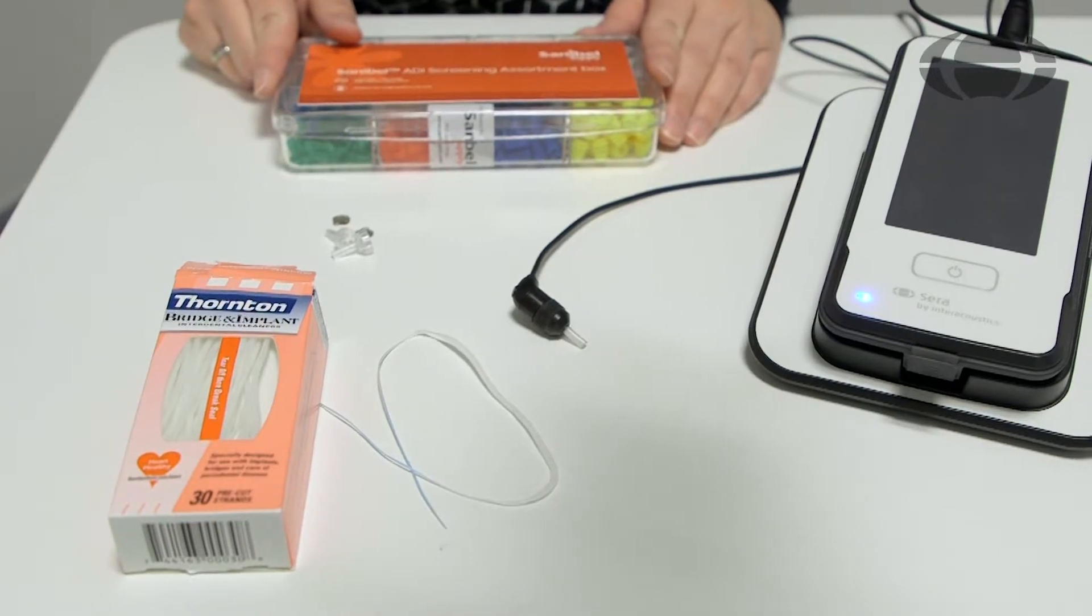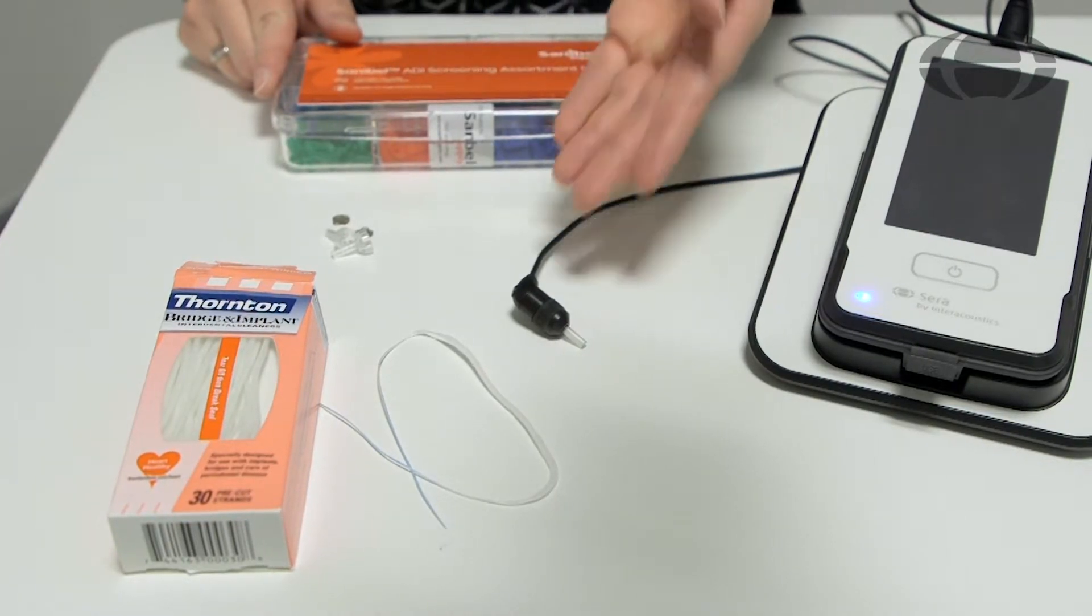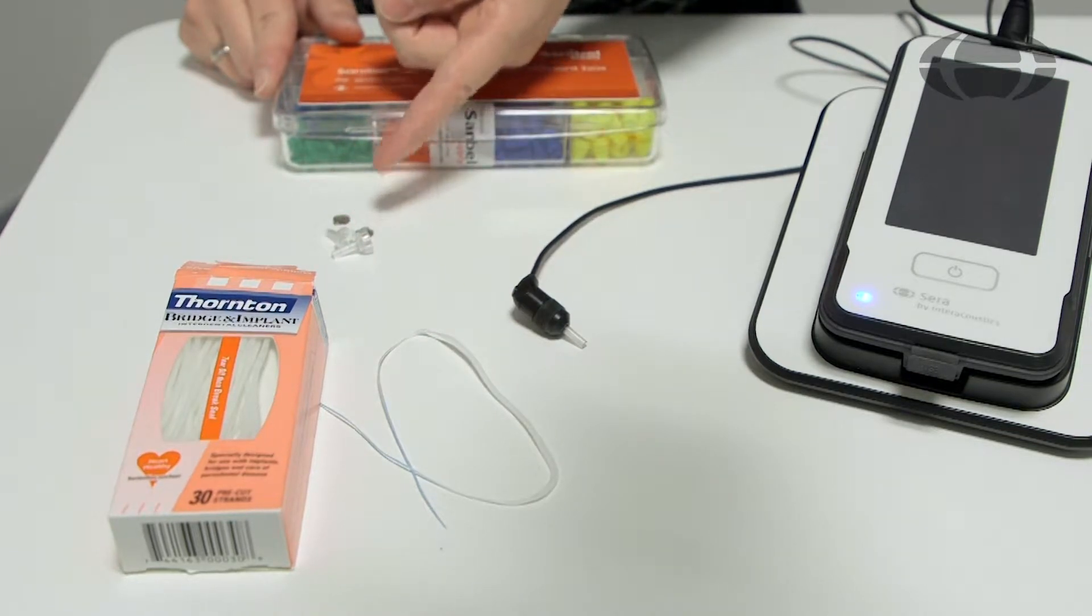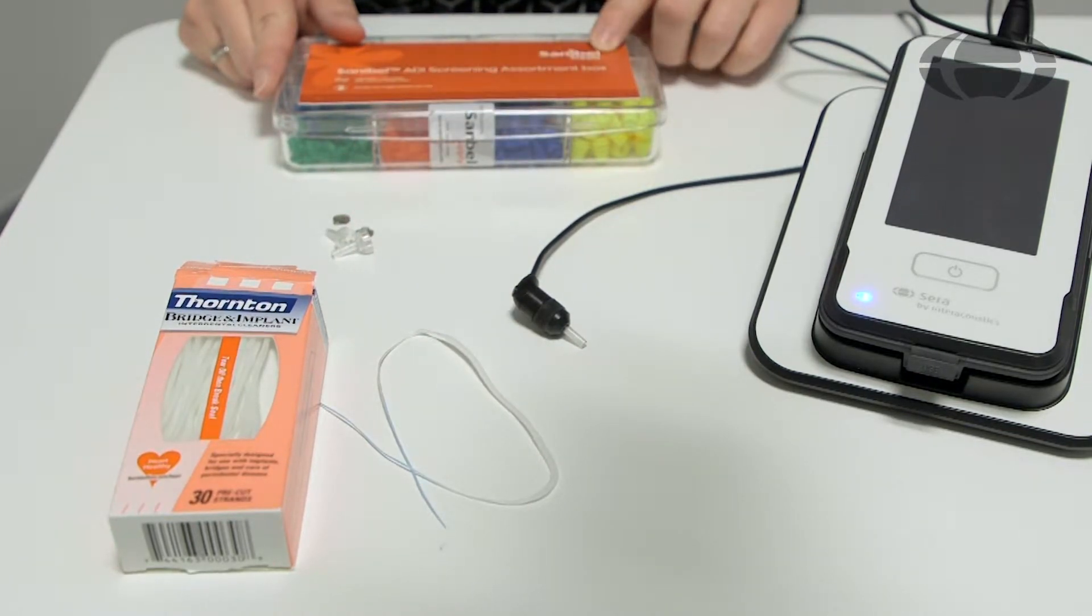Now let's have a look at the probe and its accessories. Here we have the probe, some cleaning floss, some extra probe tips, and a screening ear tip box.